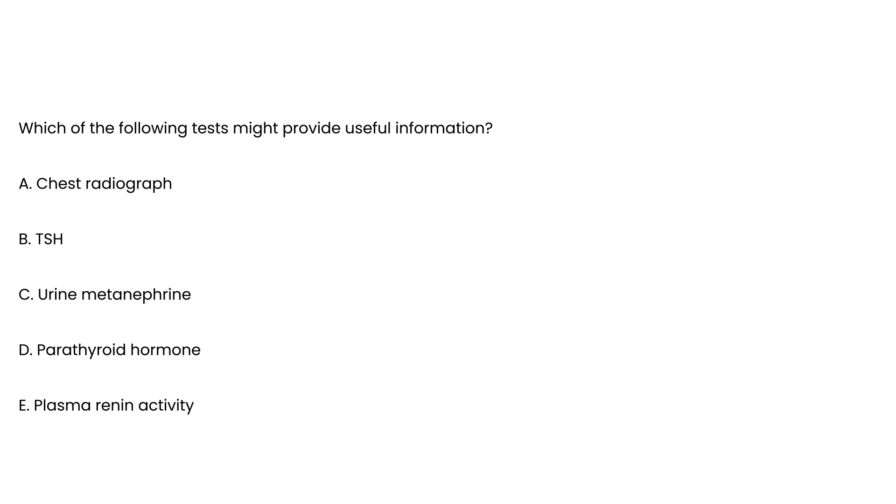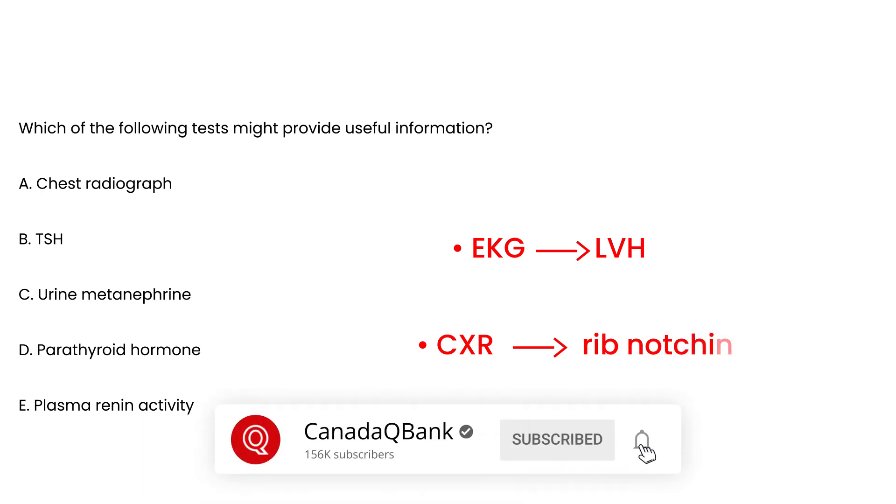Which of the following tests might prove useful? Well, the very first test that I would probably do, other than measuring her blood pressure which has already been done, is either an EKG or a chest x-ray. They're relatively simple tests. EKG will show left ventricular hypertrophy. A chest x-ray will show that rib notching that we talked about. And that would be choice A.